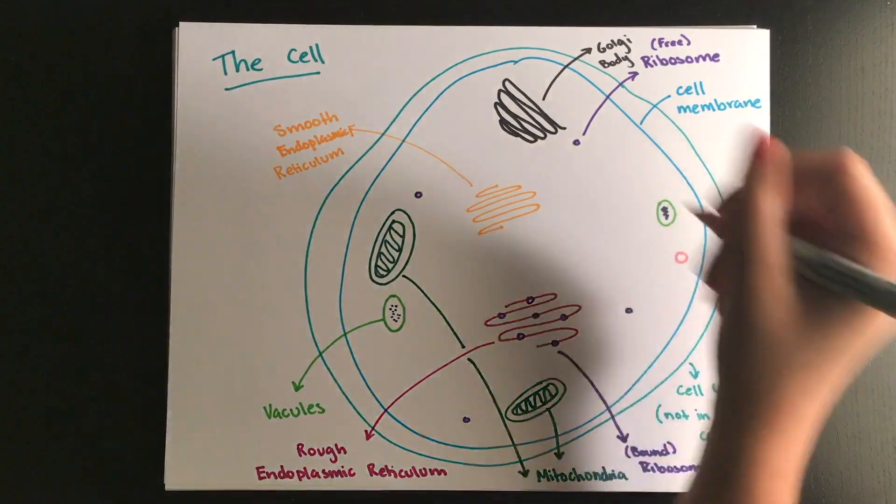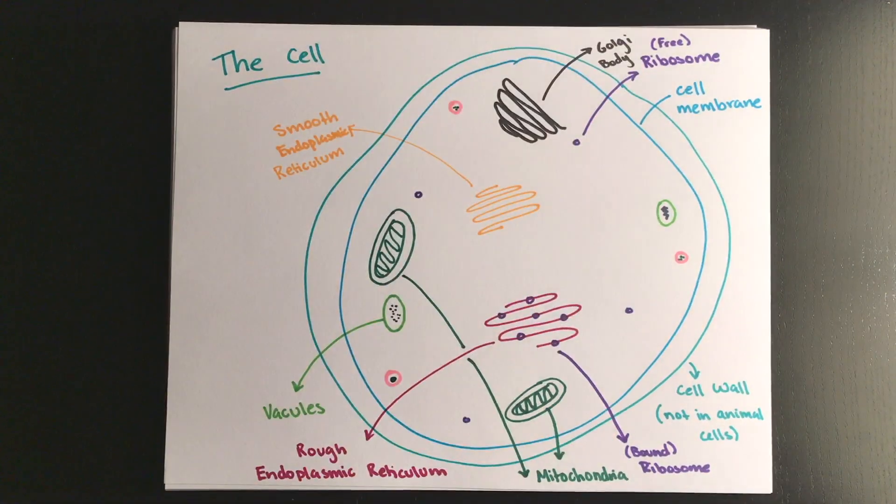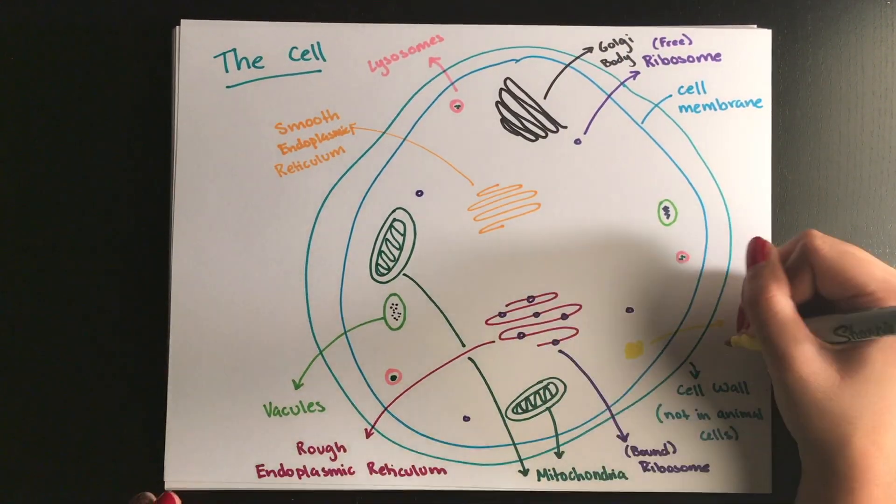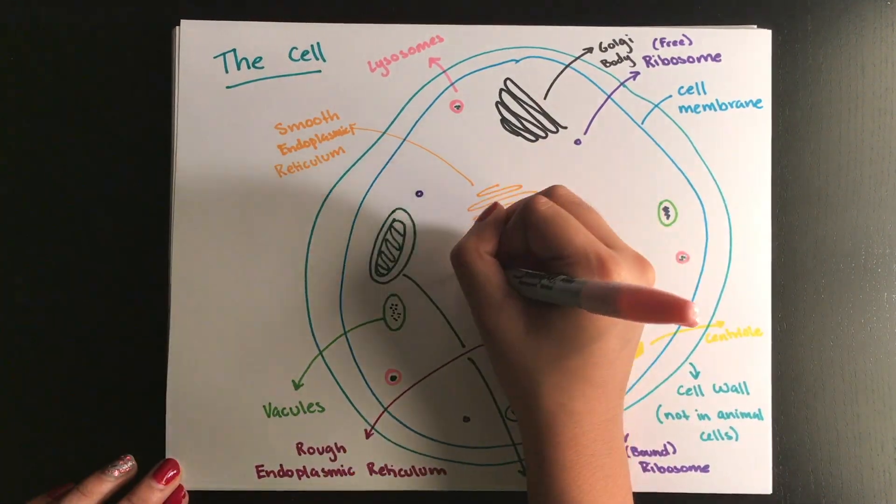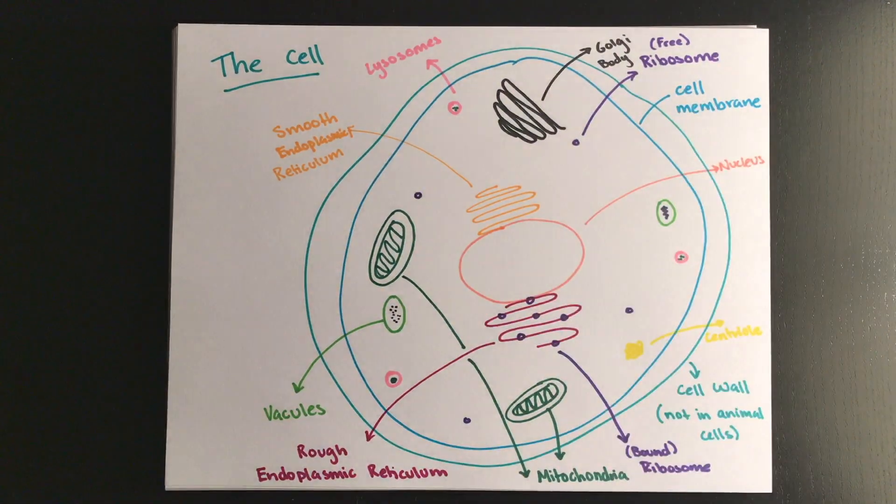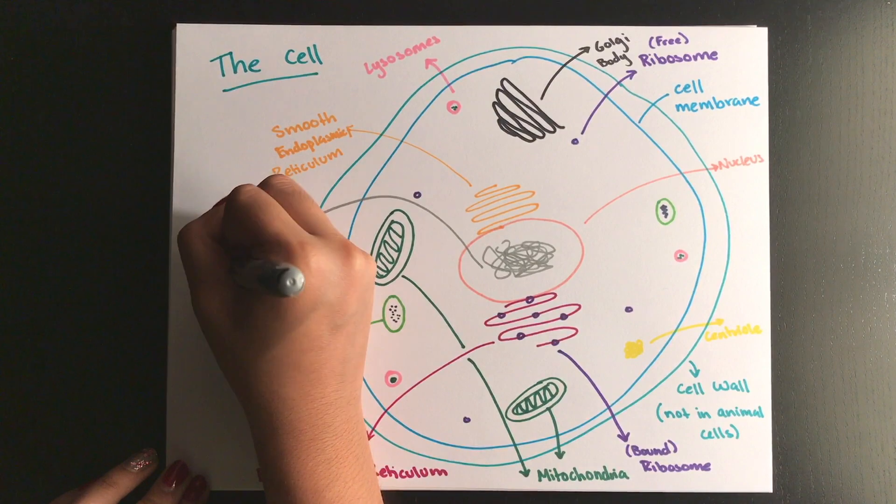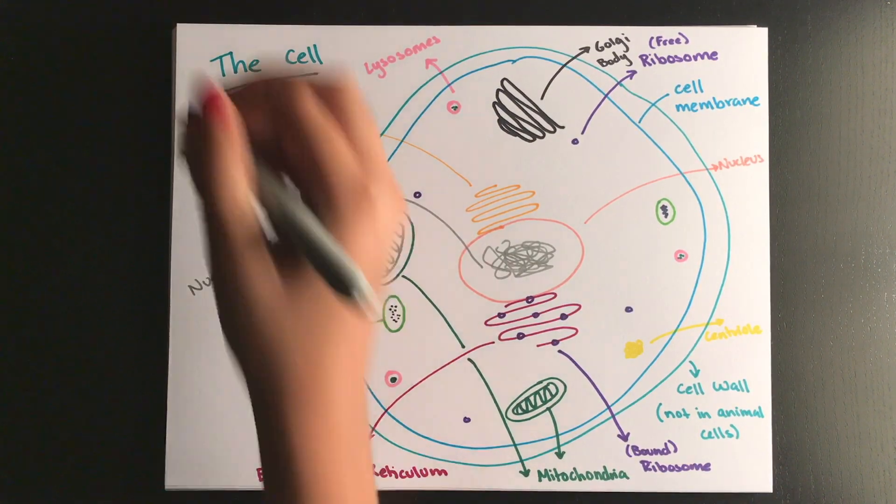Lysosomes destroy any unwanted material. That's where the stem lyse comes from, which means to break. Centrioles are very important for cell division, which we'll talk about later. The nucleus is a double-membrane structure that houses your DNA, and the nucleolus is essentially just the area where the majority of your DNA is.